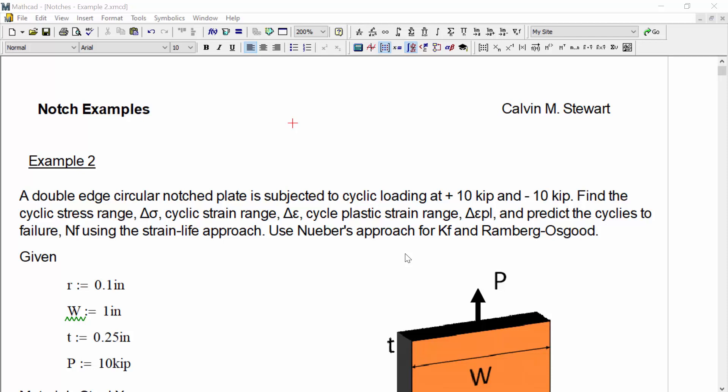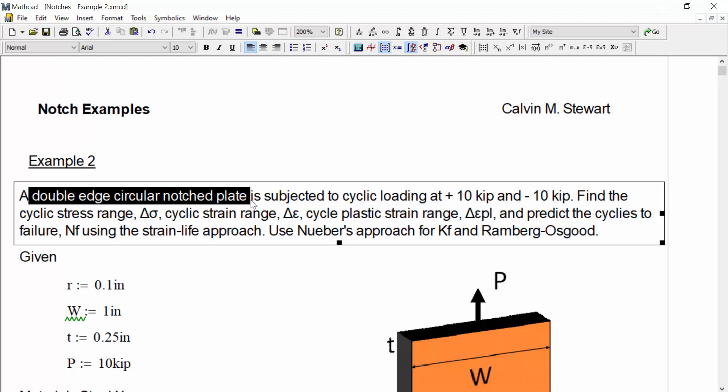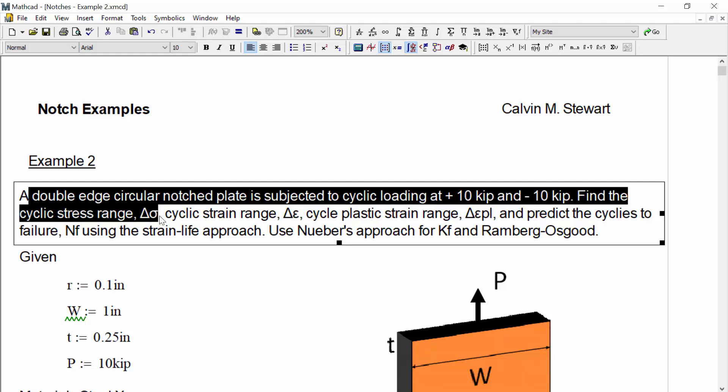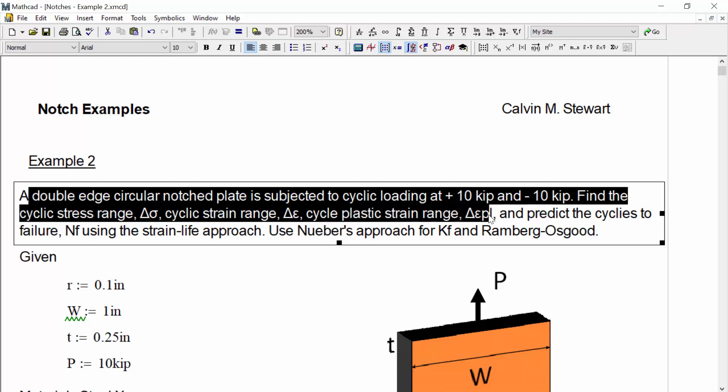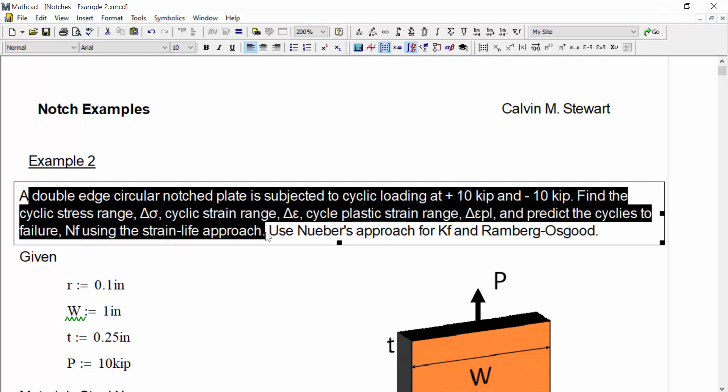In this example, a double-edged circular notched plate is subjected to cyclic loading at plus 10 kip and negative 10 kip. Find the cyclic stress range delta sigma, the cyclic strain range delta eta, the cyclic plastic strain range delta eta PL, and predict the cycles to failure NF using the strain life approach.